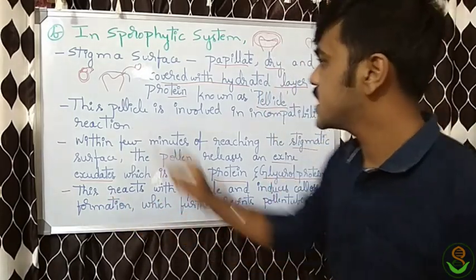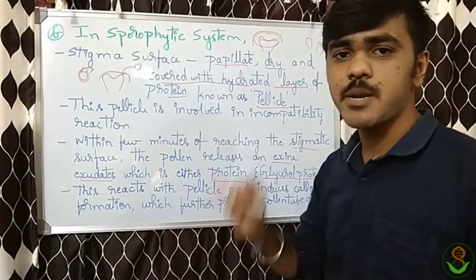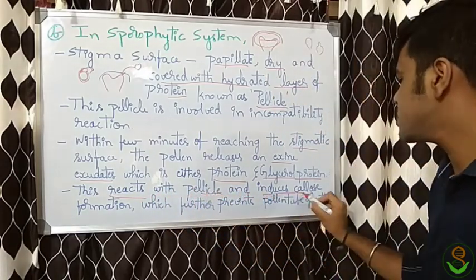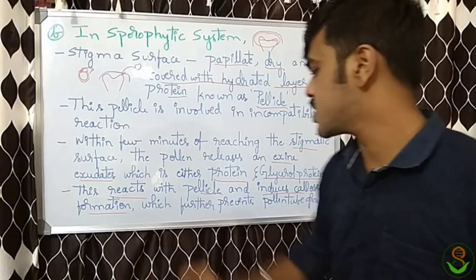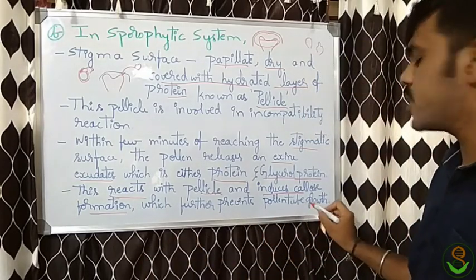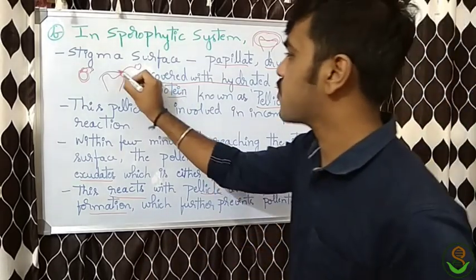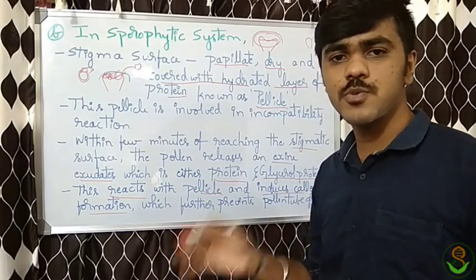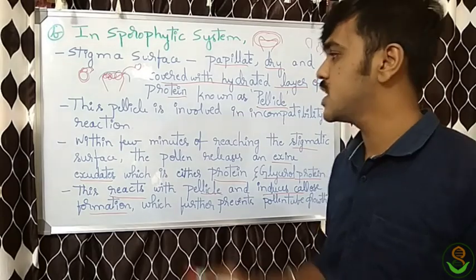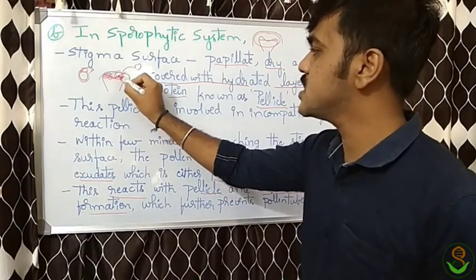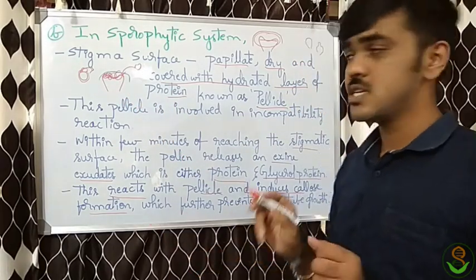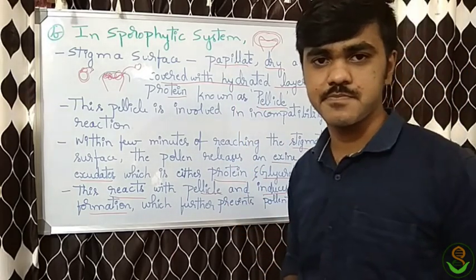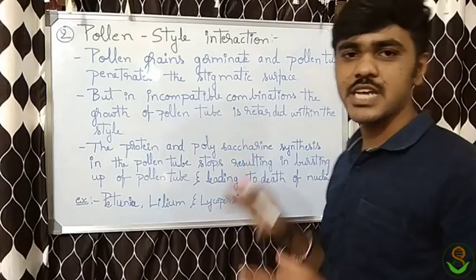This exudate interacts with the hydrated pellicle and induces callose formation, which further prevents pollen tube growth. The callose formation prevents germination at the surface itself. This is how the sporophytic system interactions take place in pollen-stigma interactions.